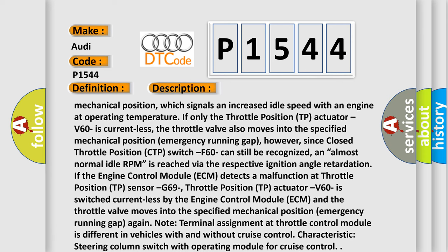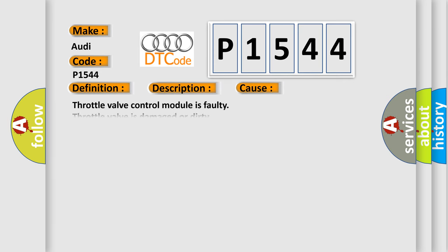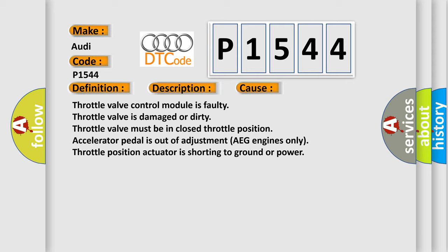Note: terminal assignment at the throttle control module is different in vehicles with and without cruise control — specifically the steering column switch with operating module for cruise control. This diagnostic error occurs most often in these cases: throttle valve control module is faulty, throttle valve is damaged or dirty, throttle valve must be in closed throttle position, accelerator pedal is out of adjustment (AEG engines only), or the throttle position actuator is shorting to ground or power.